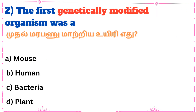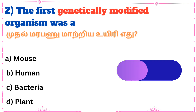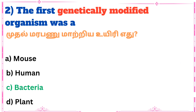Second question: What was the first genetically modified organism? Answer: Bacteria.